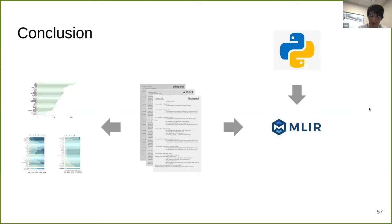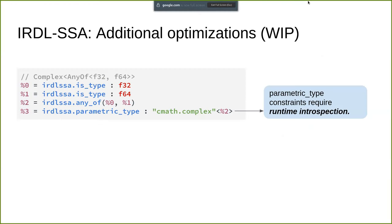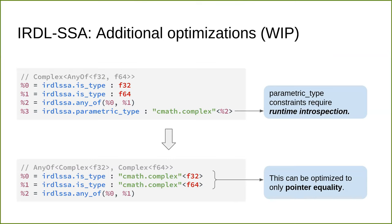Ryan asks during the extended Q&A whether the side effects in IRDL SSA could be made more explicit — for example, when an any_of type gets bound to a concrete type, could it generate a new SSA value? For instance, if LHS uses %3, and when it binds it becomes %4, then %4 would be the actual concrete type. This would make it clearer that something is changing, more closely matching typical SSA expectations where a value doesn't change once assigned.